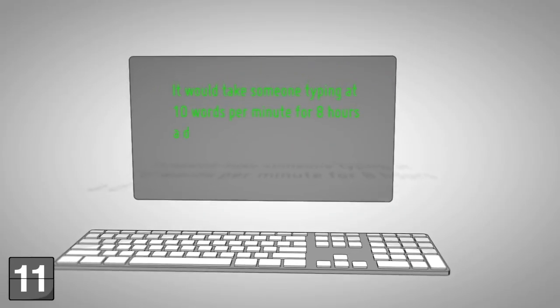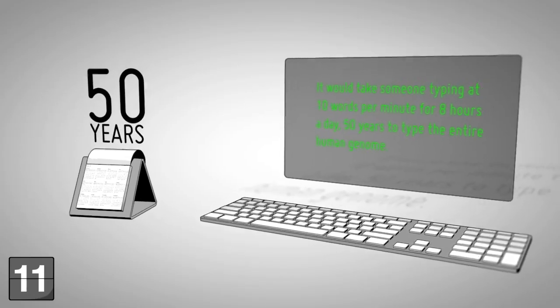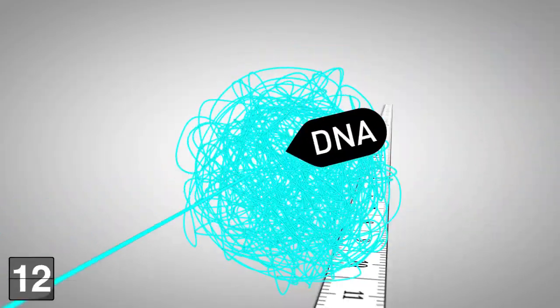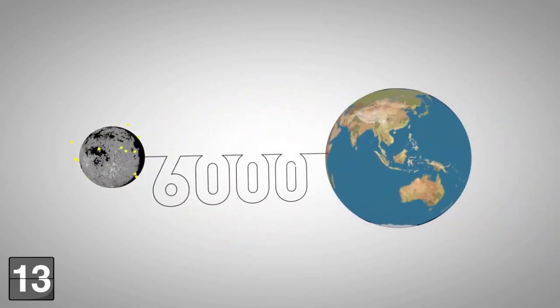It would take someone typing at 10 words per minute for 8 hours a day, 50 years to type the entire human genome. If you unwrap your DNA from one cell, it would extend more than 6 feet long. If you unwrap all of the DNA in all of your cells, it would reach the moon 6,000 times.